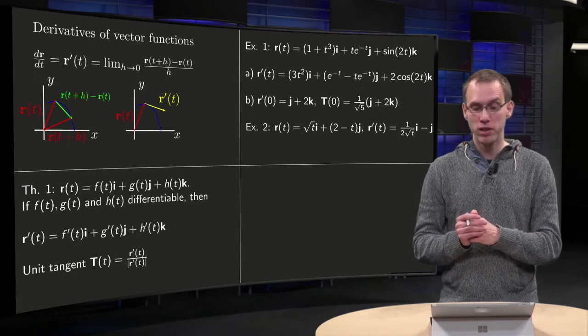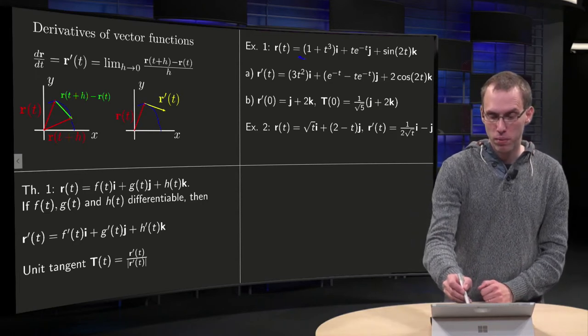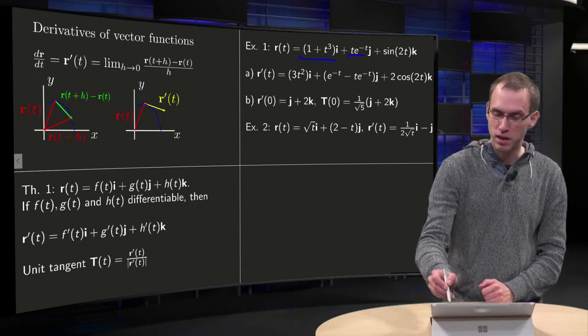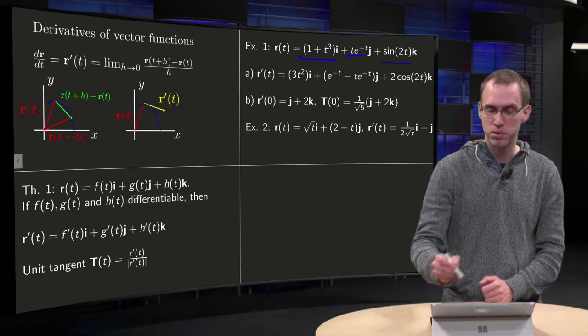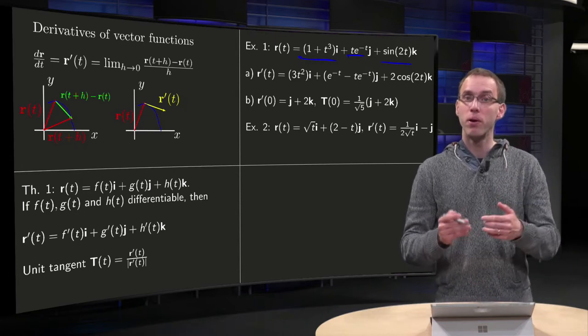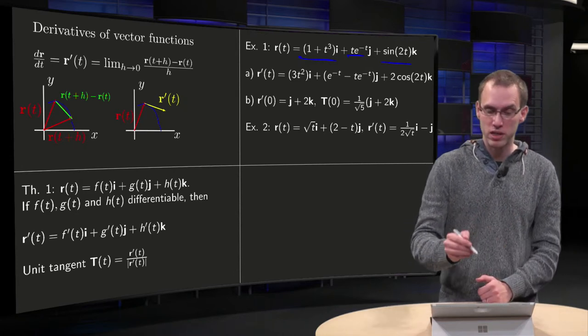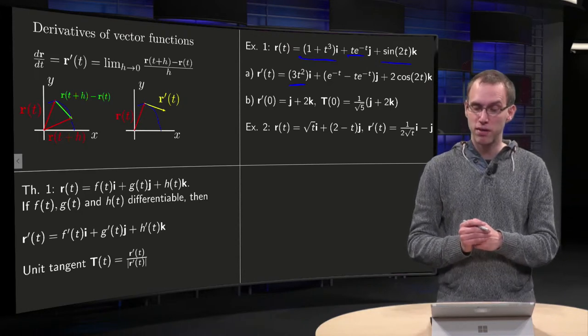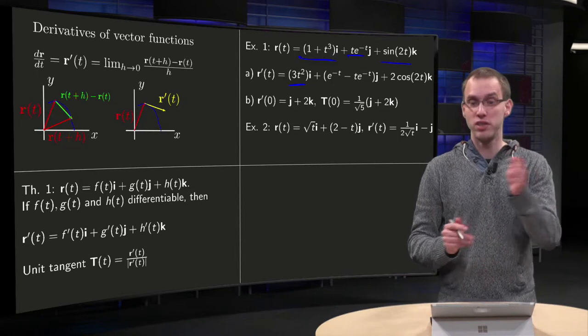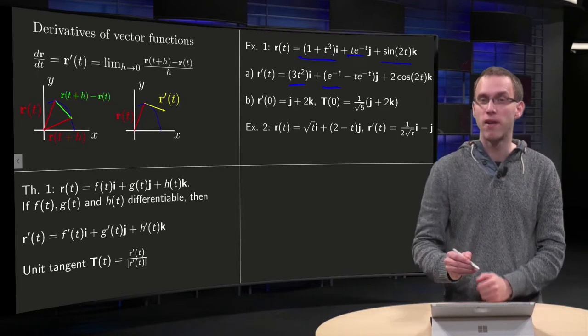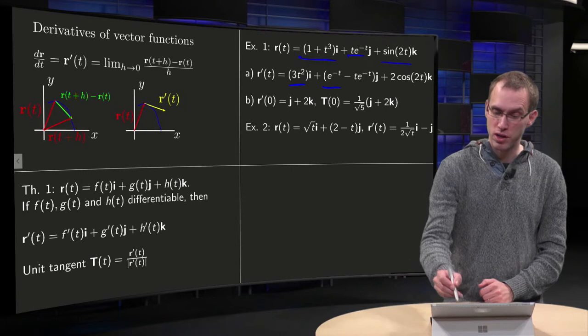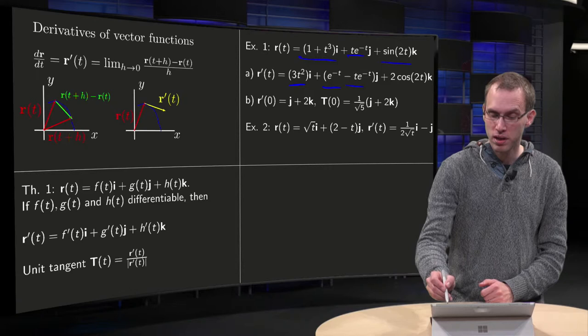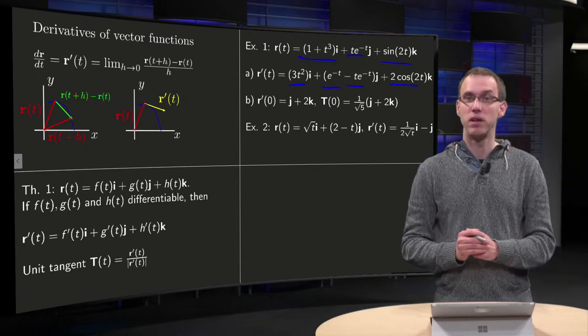So let's do a small example. If you have for example r equals (1 + t³)i + g(t)j + h(t)k, how do we find r'? Well, just differentiate component-wise. Differentiate the first component, for the second component you have to be a bit careful, because you have to use the product rule, so differentiate t and leave the e power, and differentiate the e power with the chain rule and leave the t. And for the third term differentiate sine of 2t, don't forget the chain factor, so there you are.